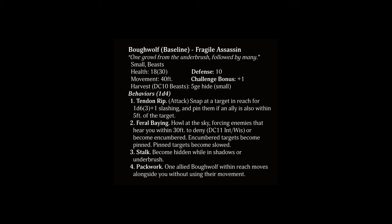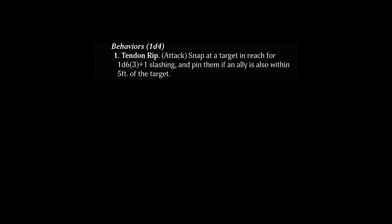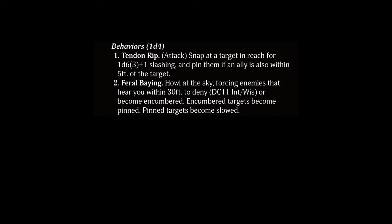Take a look at the Bowulf's stat block as an example. It's compact and flavorful, using less technical language since the GM is the one using these monsters — letting us establish shortcuts up front. For example, 'In Reach' means all monsters have 5 feet of reach unless otherwise stated, saving space to convey more flavor. Bowulfs can Tendon Rip as a basic attack, dealing damage and pinning the target if an ally is also within 5 feet. They have Feral Bang, which encumbers enemies within 30 feet — encumber doubles movement cost — and if already encumbered, a failed check causes them to become pinned; if already pinned, they become slowed. Imagine a pack of wolves all howling — the effect builds on itself and has synergy with their default attack.